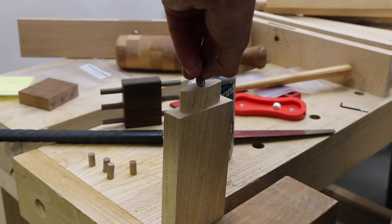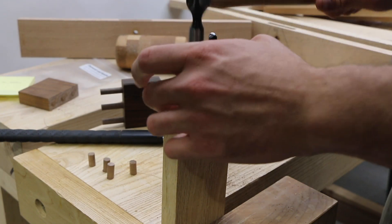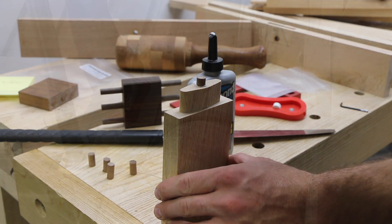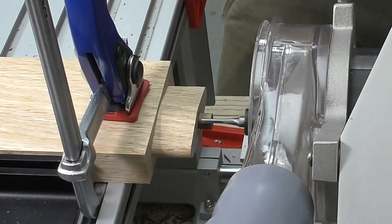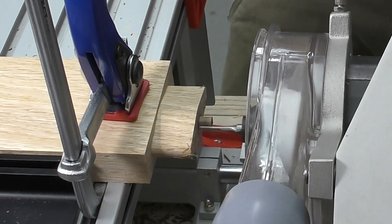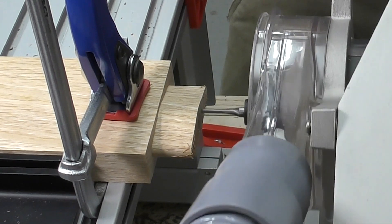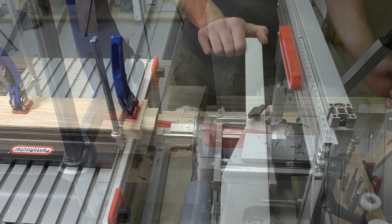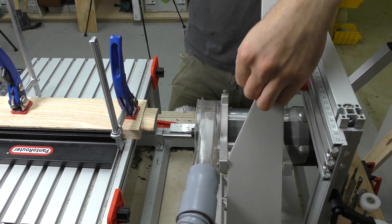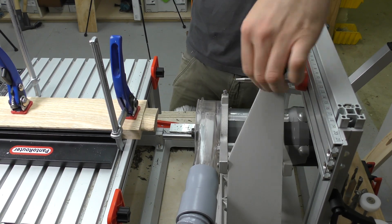Once the dowels were glued in, we set the side piece up on the pantorouter table again to cut the slot for the wedge. Freeing the guide bearing from the template allows this to trim the excess length of the dowel. Without moving the template holder, we mounted a big mortise and tenon template to cut the 1/8 inch slot for the wedges.